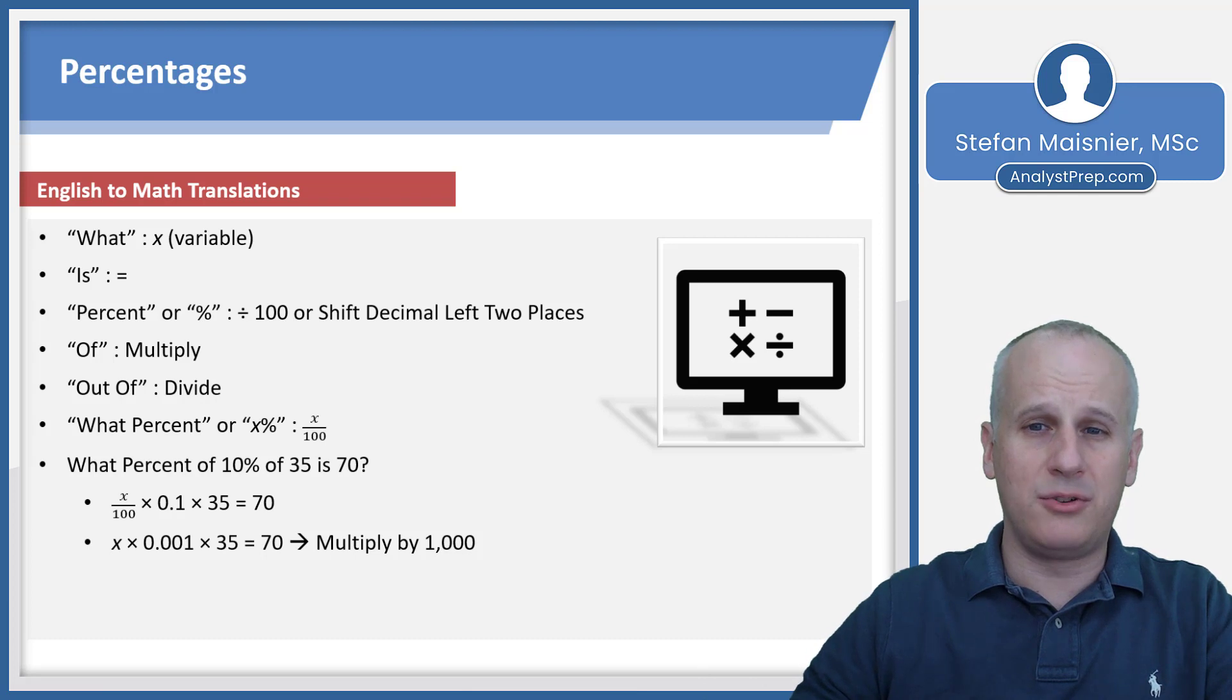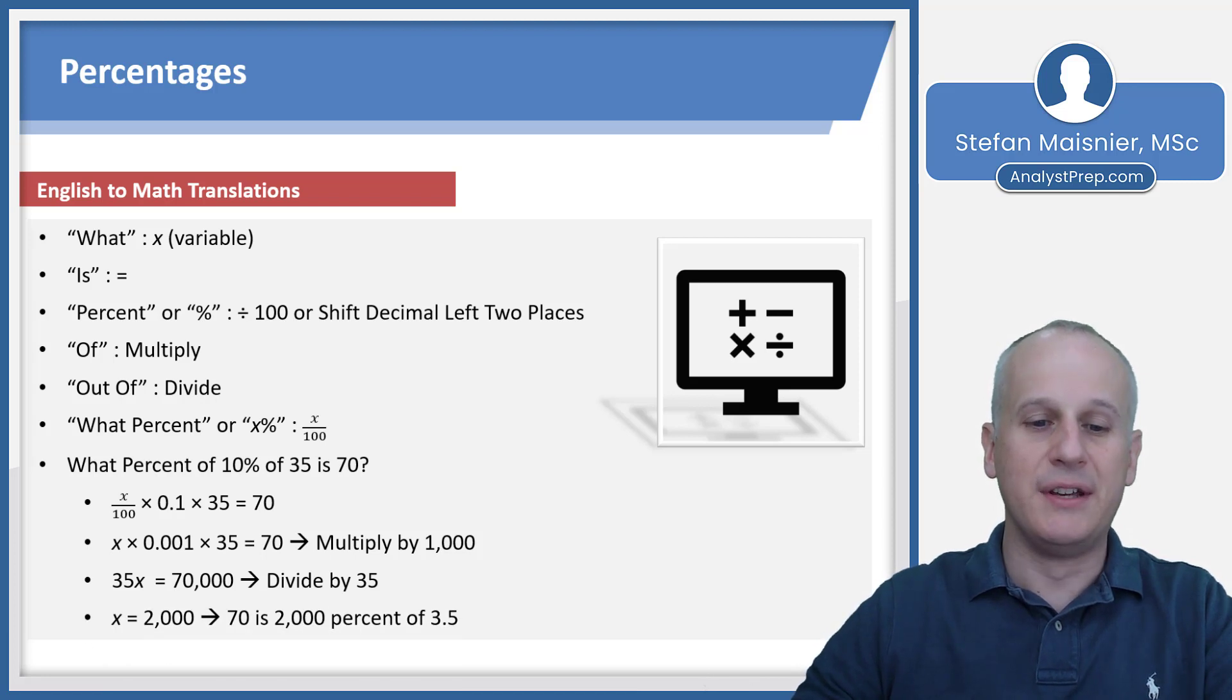We know we generally prefer to manipulate integers rather than fractions or decimals, so we multiply the whole equation by 1000 to get rid of that decimal on the left hand side. We get 35x equals 70,000. We then divide by 35 and discover that x equals 2000. So 70 is 2000% of 3.5, which was 10% of 35.